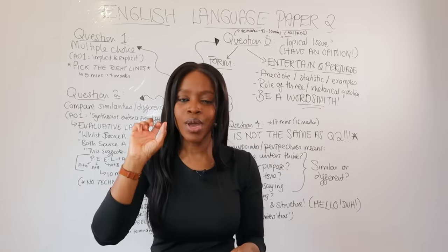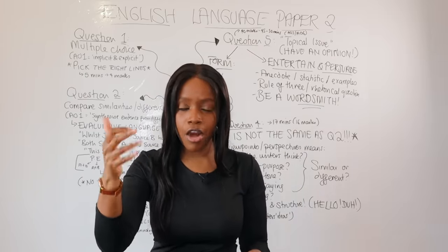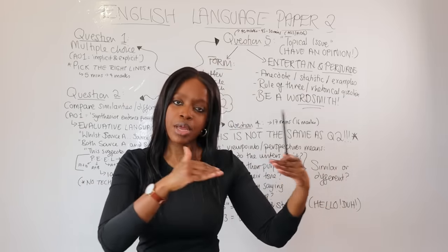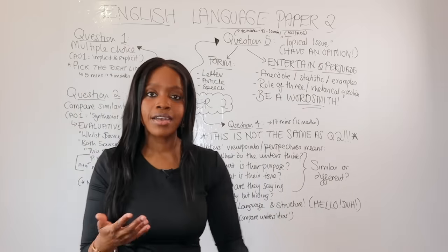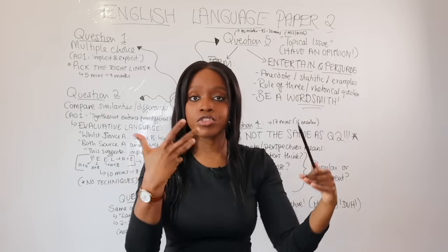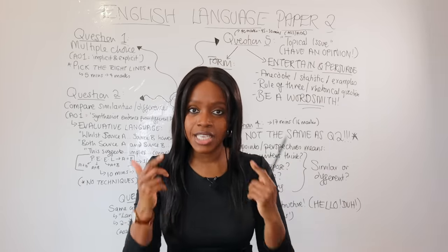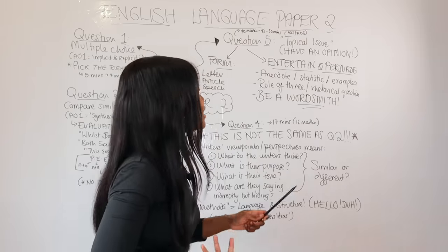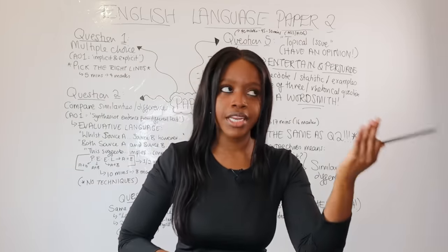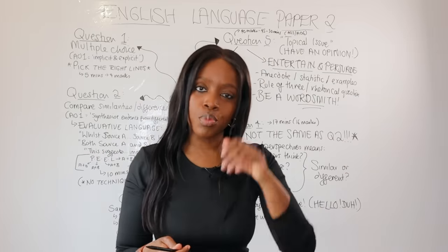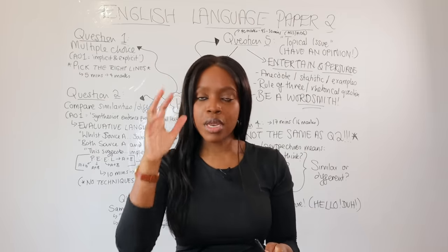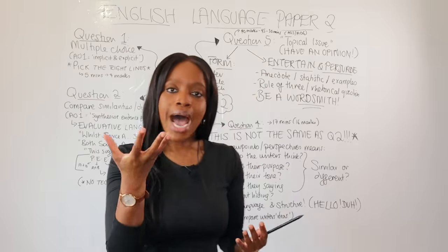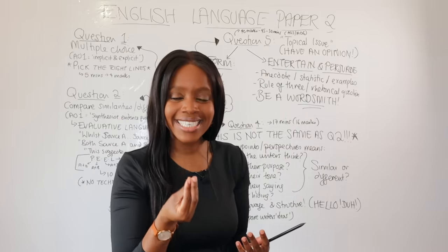Make sure you know the difference between all three forms. A letter: start with the address of the person receiving it, the date, your opening paragraph, main argument, counter-arguments, then end with 'yours sincerely' or 'kind regards.' An article: start with a headline — short and sweet — then your opening paragraph introducing the issue, a subheading to break up the text, your main points, counter-arguments, and a closing paragraph. A speech: open by addressing your audience — 'ladies and gentlemen' or 'fellow students' — then your opening, main body points, counter-arguments, and close by thanking your audience.